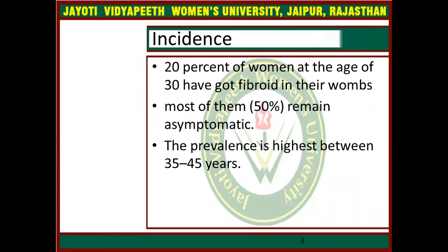20% of women at the age of 30 have fibroid in their womb; 50% remain asymptomatic and in 50% the fibroid may be symptomatic. The prevalence is highest between 35 to 45 years.